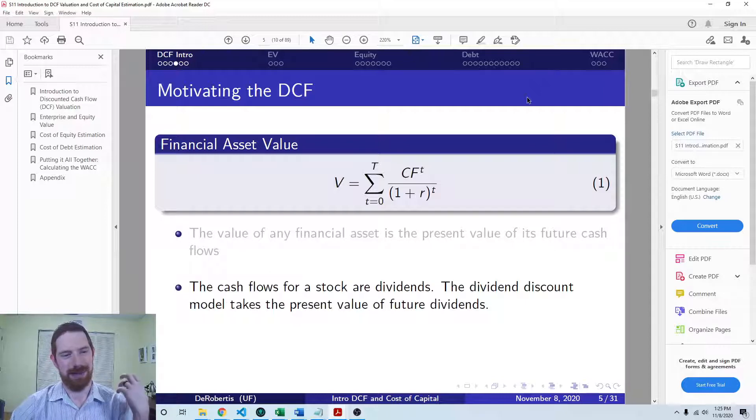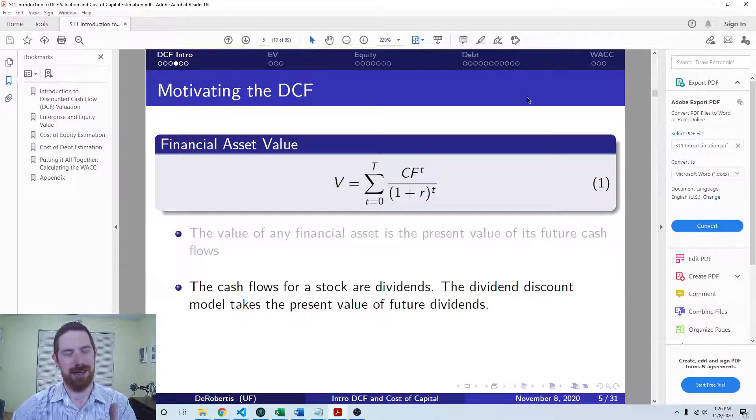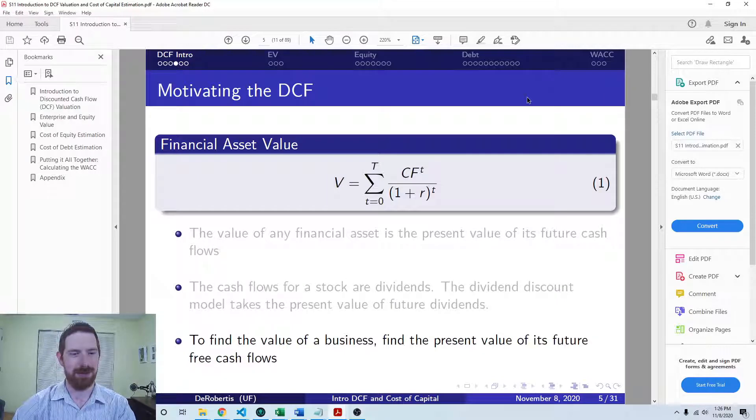And when thinking about the dividend discount model, there we're saying the dividends are the cash flows to the stockholder. And so if we just take the present value of all the future dividends, then we're going to get the value of the stock. So that's what the dividend discount model is based on. So also it is just the present value of your cash flows. And so the same thing over here on the DCF model as well.